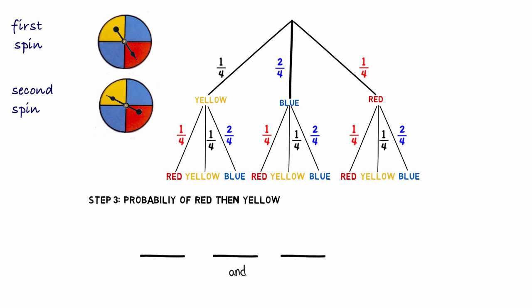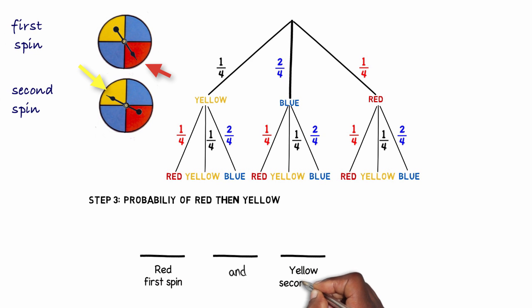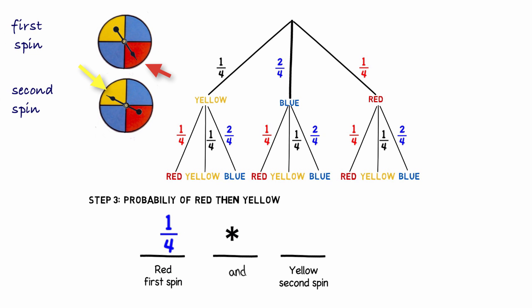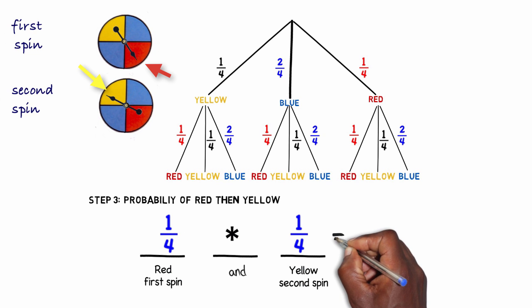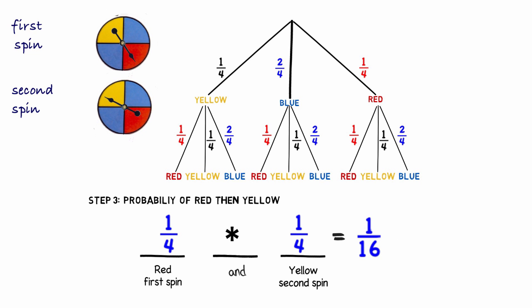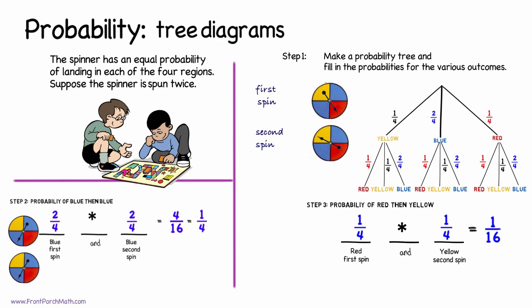Step three asks for the probability of landing on red first and yellow second. The probability of red is one in four and the probability of yellow is also one in four. So the probability of both of these events occurring is one in 16. That concludes our activity.